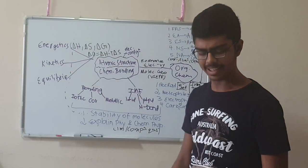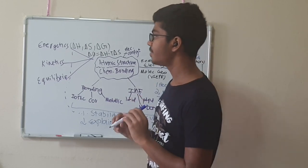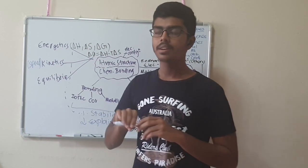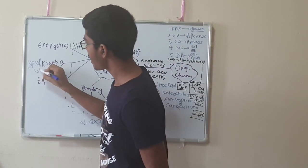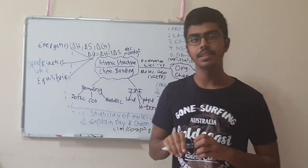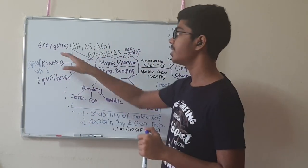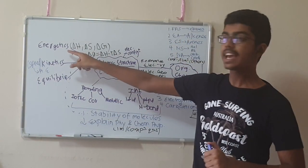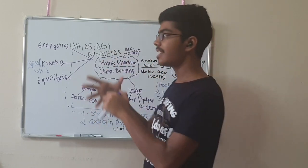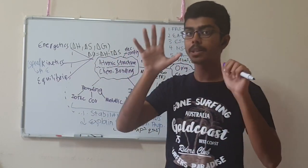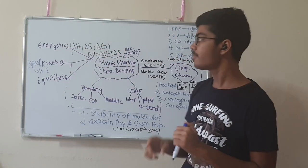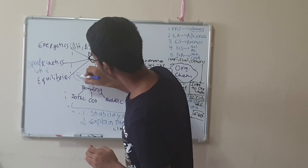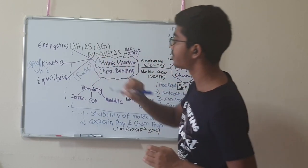Kinetics deals with the speed of reactions and the concept of activation energy. This is about how fast a reaction takes place, rather than whether it's spontaneous. For example, the conversion of graphite to diamond is energetically feasible — diamond has less energy than graphite — but the activation energy is extremely high, so the conversion is very slow.